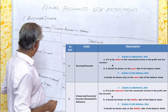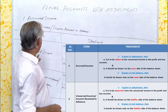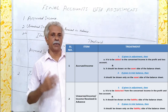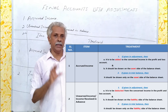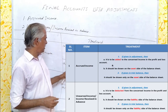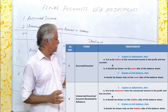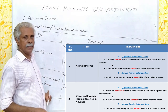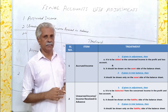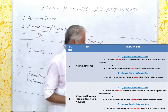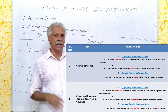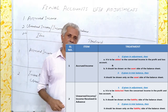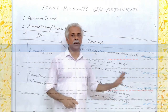To summarize the treatment of the two items discussed today — accrued income and unearned income: For accrued income, whenever it is given in the adjustment, it should be added to the concerned income in the P&L account and also shown as an asset in the balance sheet. Whenever it is given in the trial balance, it should be shown only as an asset in the balance sheet. For unearned income, whenever it is given in the adjustment, it should be deducted from the concerned income in the P&L account and also shown as a liability in the balance sheet. If given in the trial balance, it should be shown only as a liability in the balance sheet. Thank you.